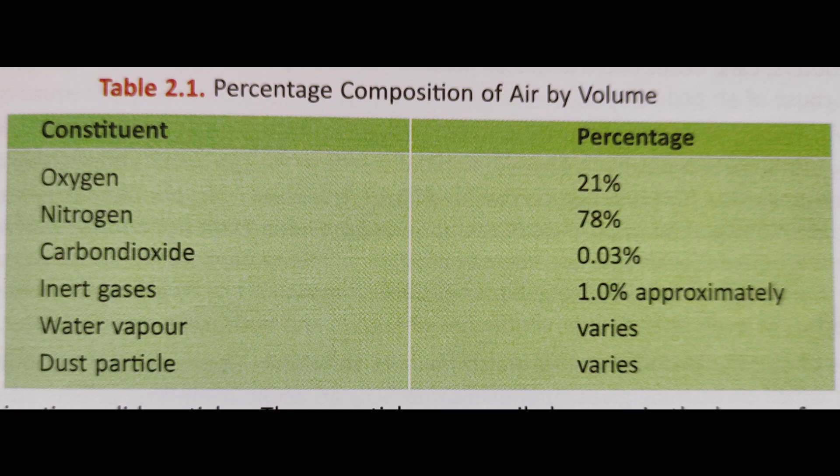So this is the percentage of composition of air by volume. Remember that air is a mixture of gases. Here oxygen is one-fifth and nitrogen is four-fifths. That is very interesting in fraction to know all this.